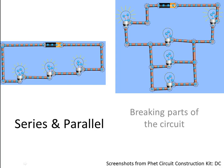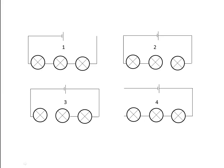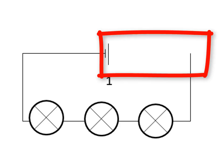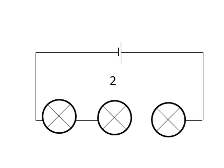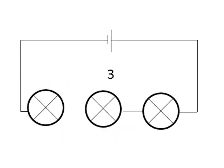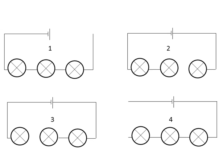What happens if we break a series or a parallel circuit at various places? Let's start with a series circuit. Previously we built this circuit. Predict what will happen if we break the circuit in these different ways: in one, we break it immediately after the positive terminal of the battery; in two, between these two bulbs; in three, between the next two bulbs; and in four, just before the negative terminal. Which bulbs, if any, will shine in each of these four circuits?